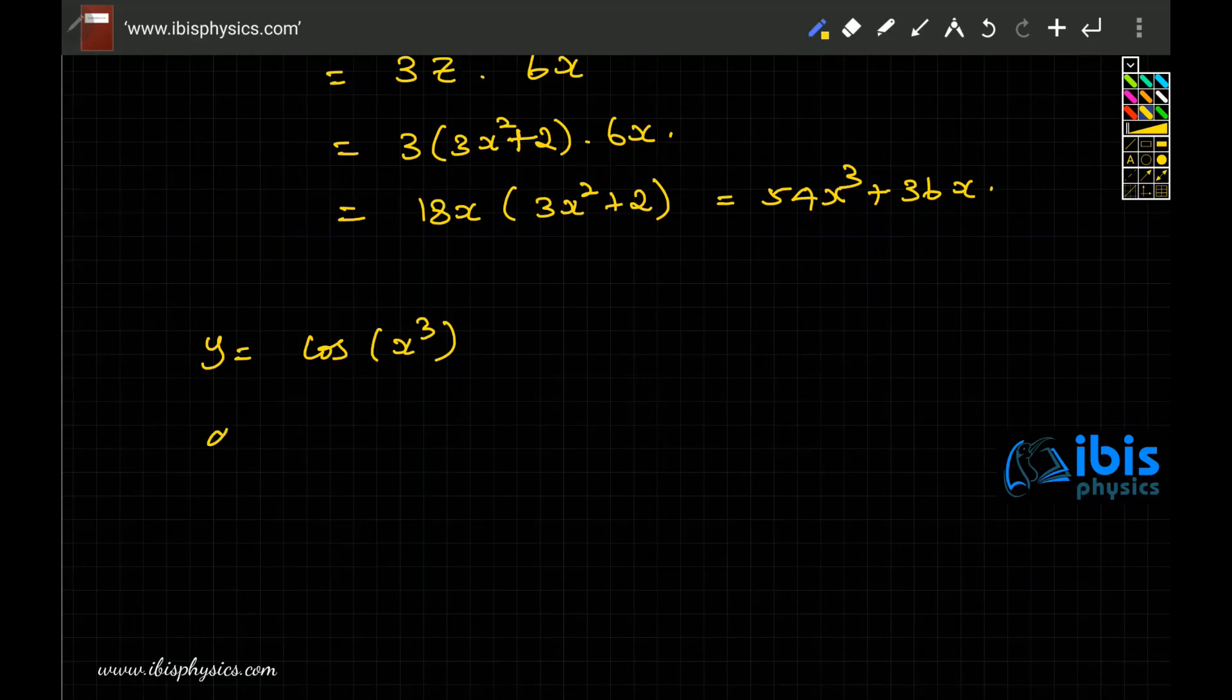y equals cos(x³) means dy/dx is actually, cos of x derivative is -sin x, so it is -sin of, keep x³ as it is and consider x³ as another function and differentiate that.